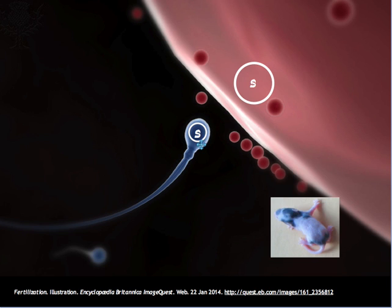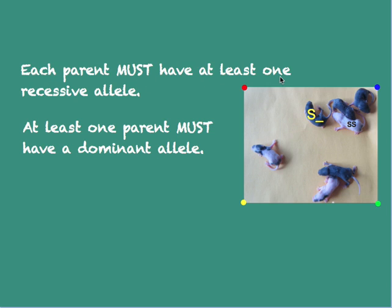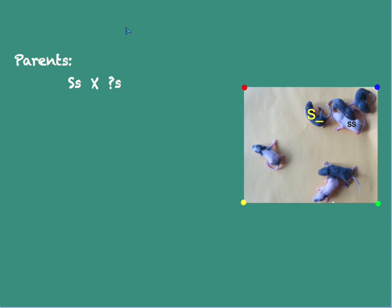The spotted appearance can only result from a combination of two recessive alleles. Each parent must have at least one recessive allele — this is the only way to account for the presence of spotted offspring. And at least one parent must have a dominant allele, which accounts for the solid coat color. We are certain that each parent carries a recessive allele, and at least one parent must be heterozygous, with the other parent's allele being either little s or big S — dominant or recessive.